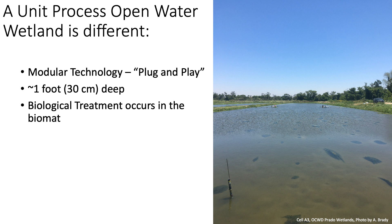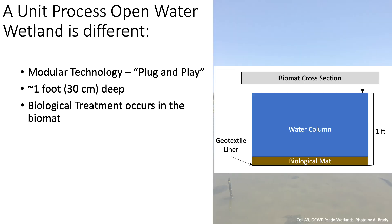To keep plants from growing within it, they are lined with a geotextile liner very similar to the weed barrier you can put in your garden. Once placed in operation, this liner unexpectedly became colonized by photosynthetic microbes, creating a biological mat, also known as a biomat. This biomat began removing nitrate, a primary nutrient and cause of eutrophication, at a level exceeding that of many other wetland designs.